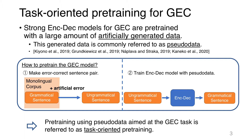How is pseudo-data used in GEC? First, make error-correct sentence pairs by introducing artificial errors into a monolingual corpus. Then, pre-train the encoder-decoder model with the pseudo-data. Some researchers investigate how to make pseudo-data suitable for the GEC task.